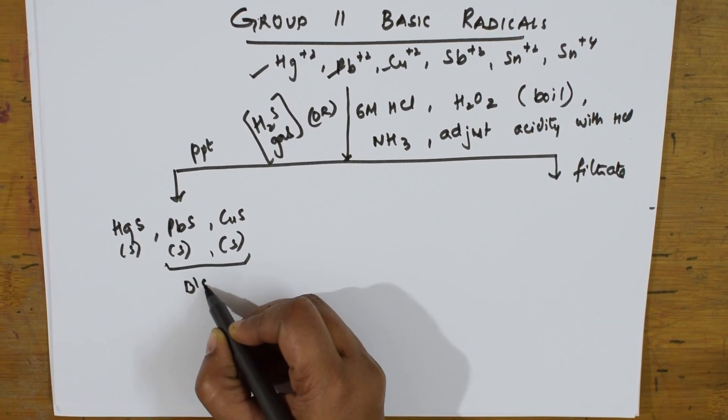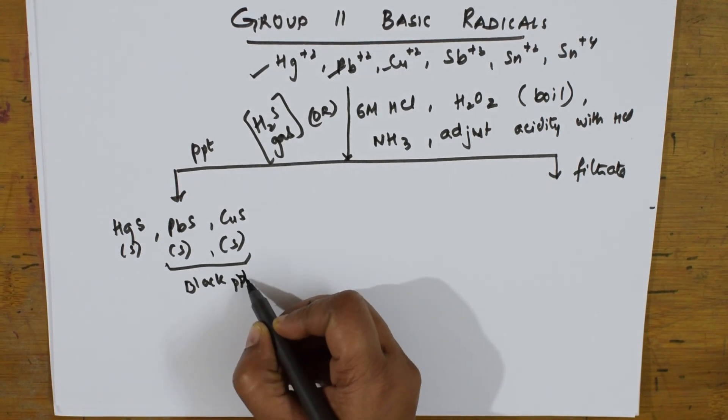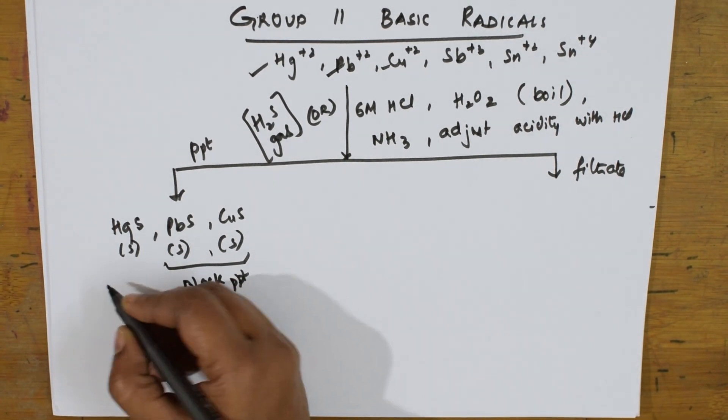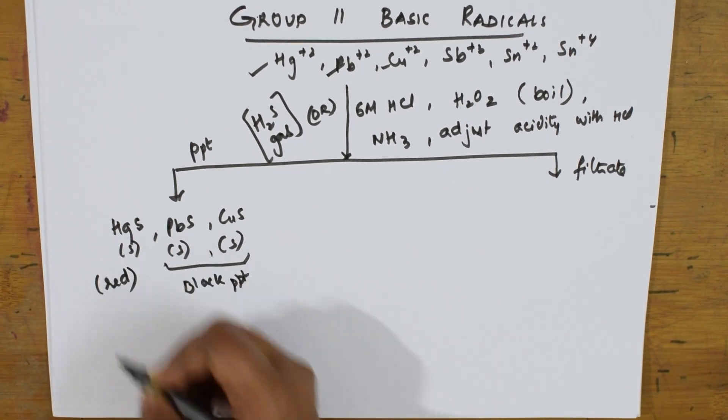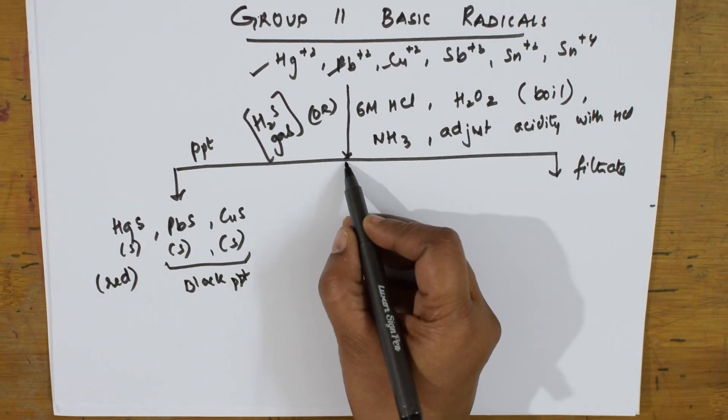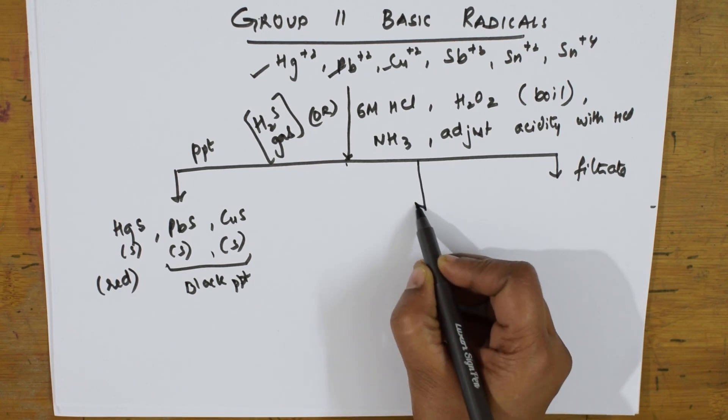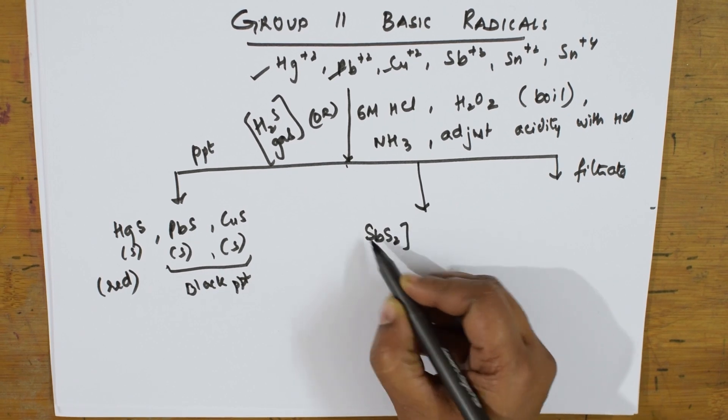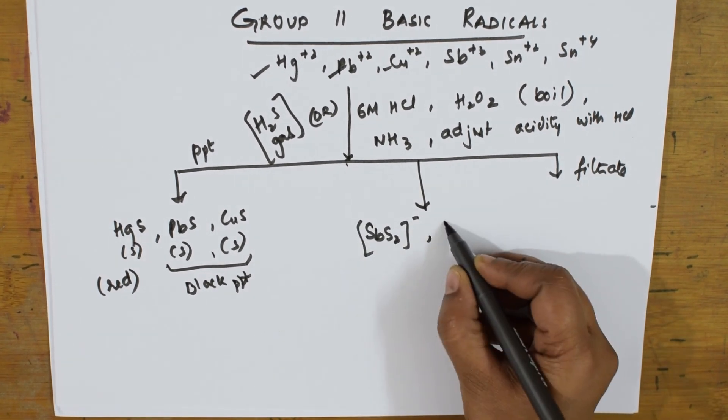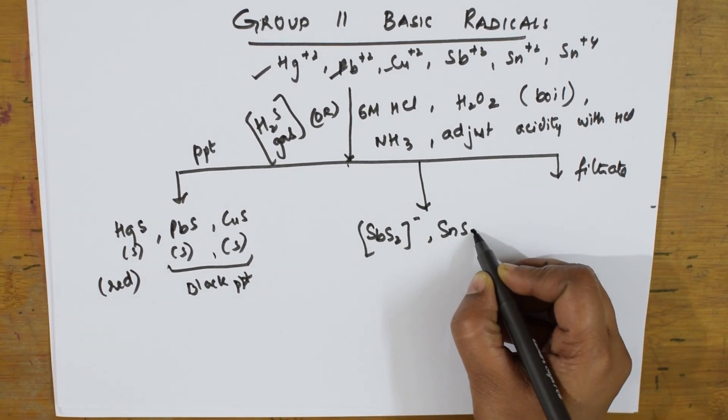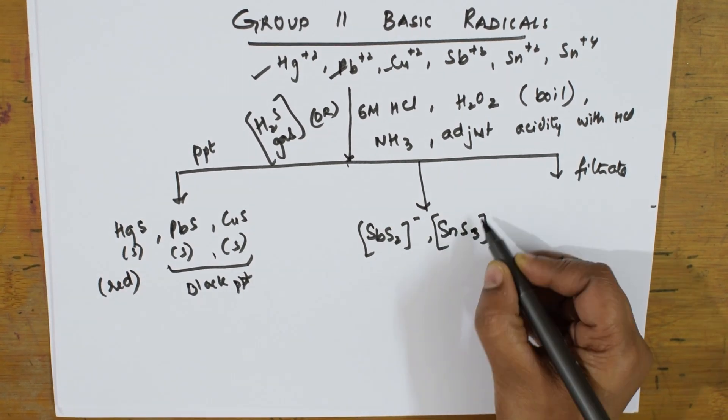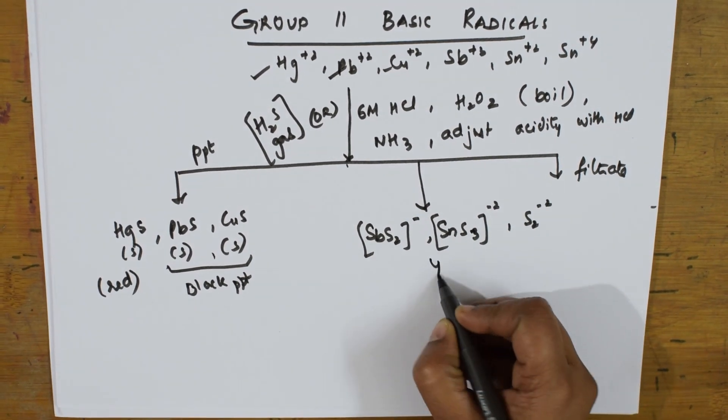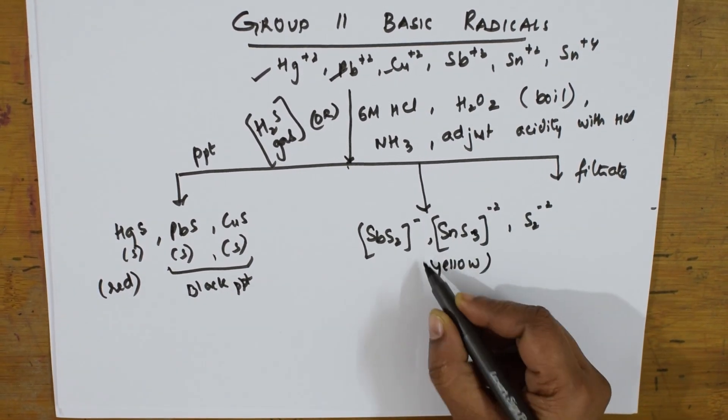They form black PPT. Sometimes, occasionally, HgS is going to form red. Occasionally it's going to form red PPT also. The other class is left out. The other cations, they precipitate as Sb₂S₃²⁻ and S²⁻. All these are yellow in nature.